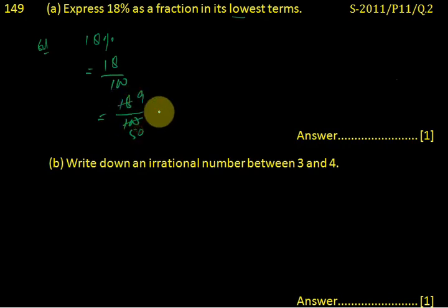2 times 9 is 18, and 2 times 50 is 100. So 9 upon 50 is the lowest term because it cannot be further divided by any number. 9 upon 50 is the correct answer.